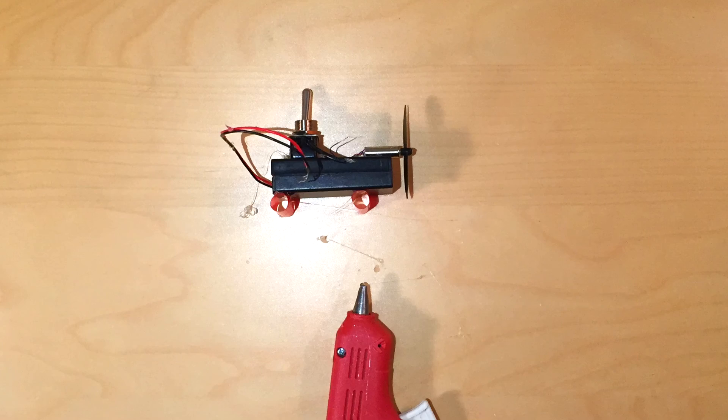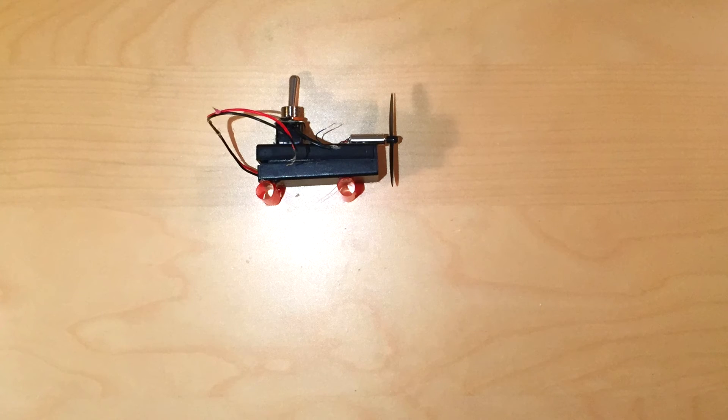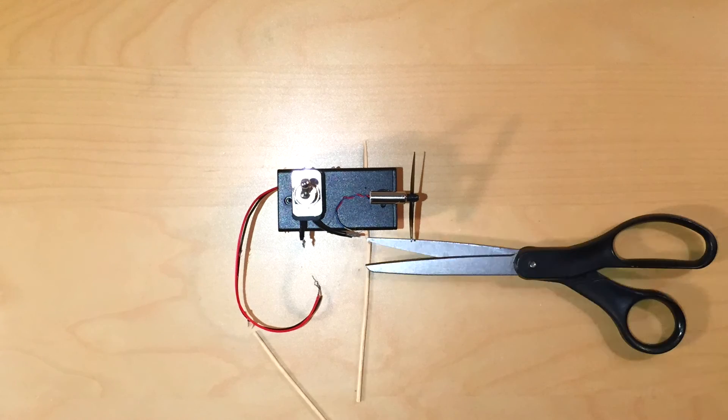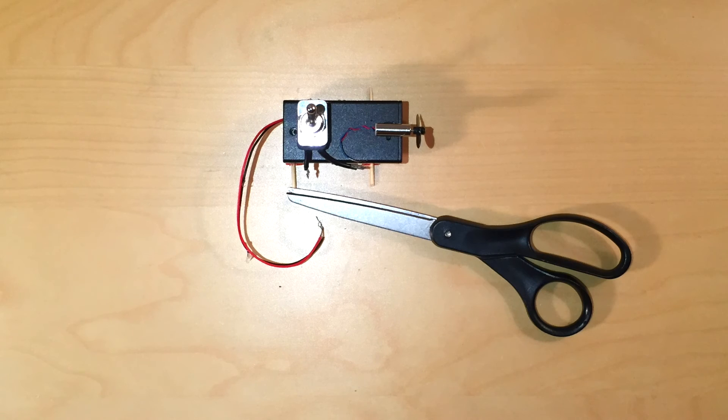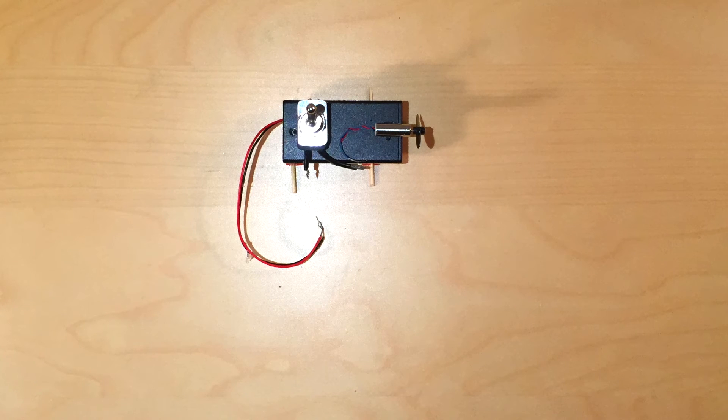Then glue another piece to the back end of the vehicle. Next we'll cut the skewers. Cut them so there's a solid inch on either side of the chassis. They can be cut down even more once we attach the wheels. Now once you've cut the skewers, slide them through the straws.